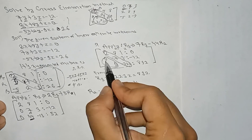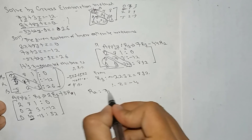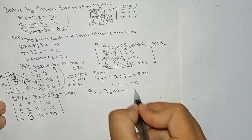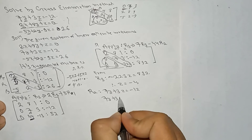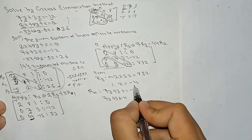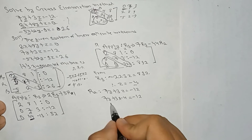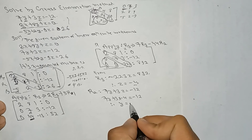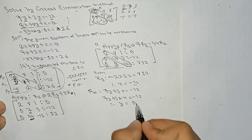From R2, the value of x is 0, so we have: 7y plus 3z equals minus 12. Substituting z equals minus 4: 7y plus 3 times minus 4 equals minus 12. Solving this, we get y equals 0.